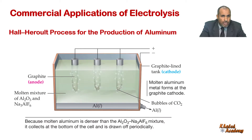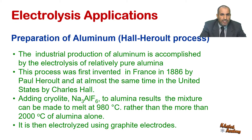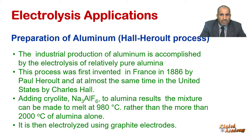The third commercial application of electrolysis is the manufacture of aluminium. Although aluminium is the third most abundant element in the earth's crust at about 8.23 percent by mass, it remained a rare and expensive metal until 1886, when 22-year-old American Charles Martin Hall and 23-year-old Frenchman Paul Héroult independently devised a practical process for the electrolytic production of aluminium.